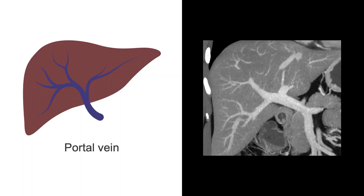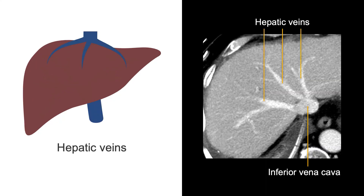When evaluating the liver vasculature, you should first check the portal vein and follow it into the liver as it splits into the right and left branches. In portal venous phase CT, the right, middle, and left hepatic veins are usually filled with contrast mixed blood and can be seen emptying into the inferior vena cava, which is found along the back side of the liver.